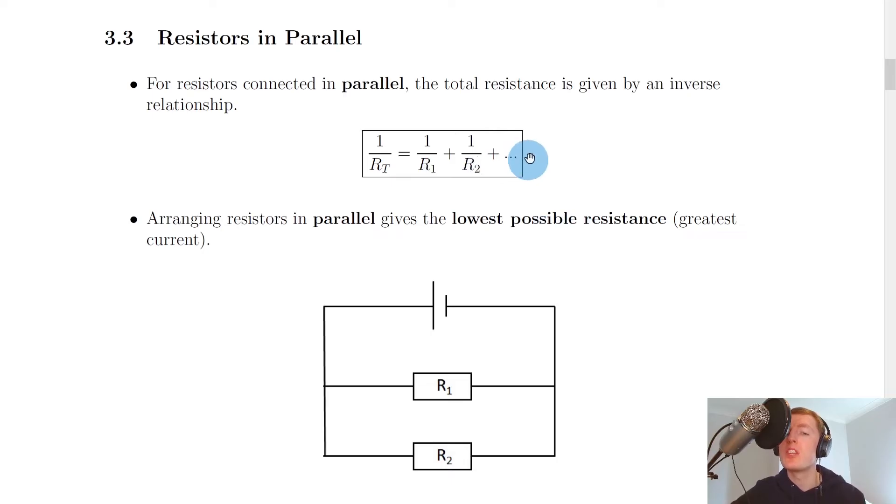Remember, the dot dot dot means that you'll stop whenever you get to the total number of resistance values that you have in the question. So if I had, say, 3 resistors, then I would say 1 over RT equals 1 over R1 plus 1 over R2 plus 1 over R3, and then stop because there's no more resistors.